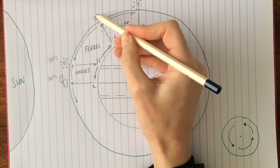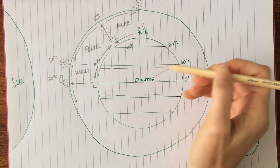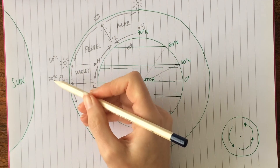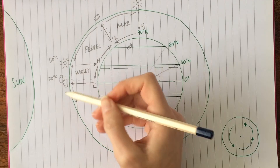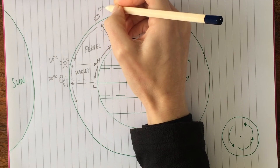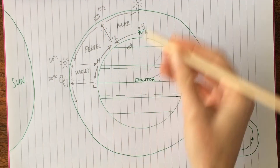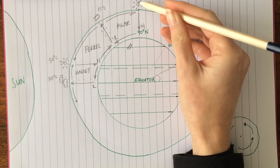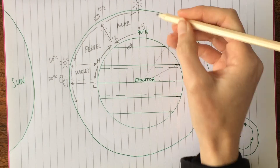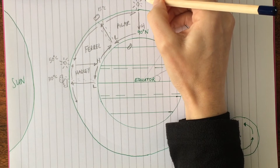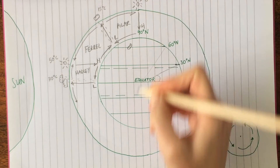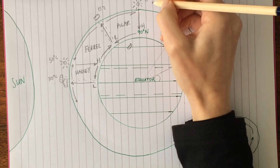Bearing in mind that at 60 degrees north we're much further from the equator, temperatures are not going to be in the 30s or the 50s — they're going to be more like a yearly average of 15 degrees. And obviously at the poles, where we've got the sinking air and clear sky, it's going to be bitterly cold — anything less than zero degrees.